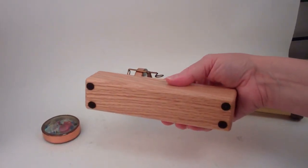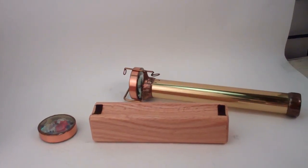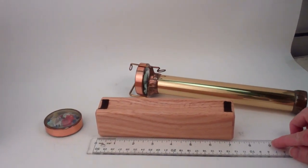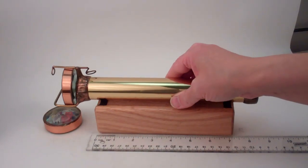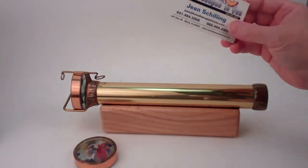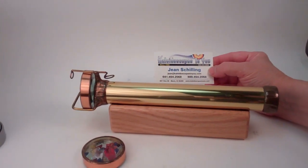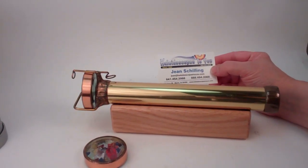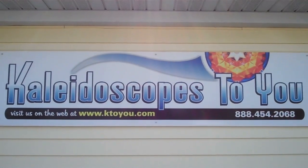The base that it comes with is a solid oak base with felt feet, and that is approximately seven inches in length. This is a vintage Wins Eye Studio Kaleidoscope, currently available at Kaleidoscopestoyou.com.